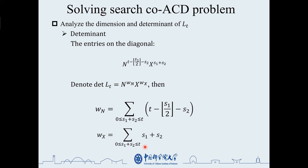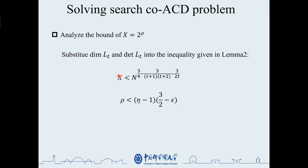Then, we substitute them into the inequality in lemma 2 to obtain the bound of root x. Then, replacing x by the root power of 2, we can get the result about solving the search co-ACD problem. When n is greater than 2, it is a similar approach, and the details can be found in the full article.